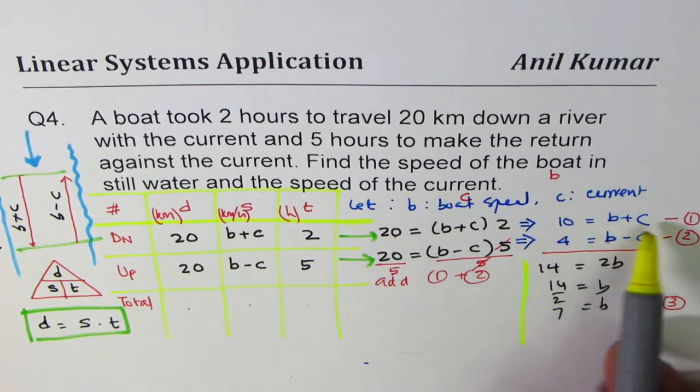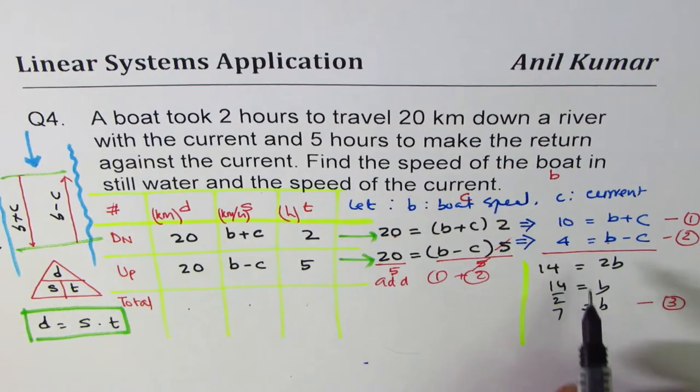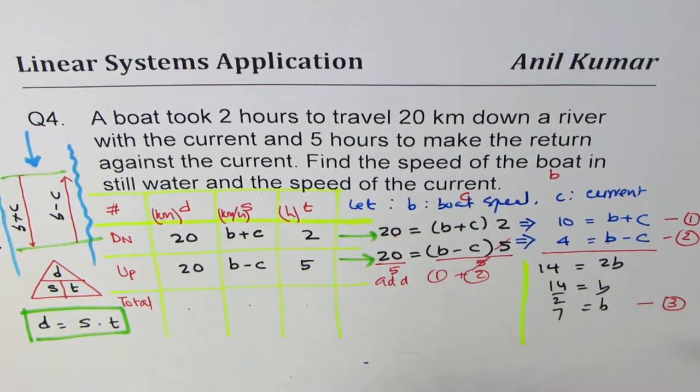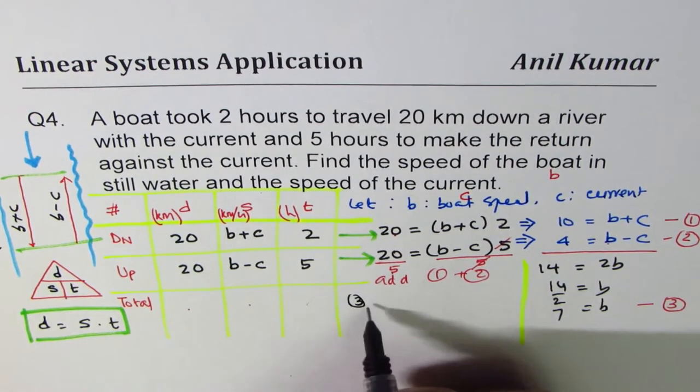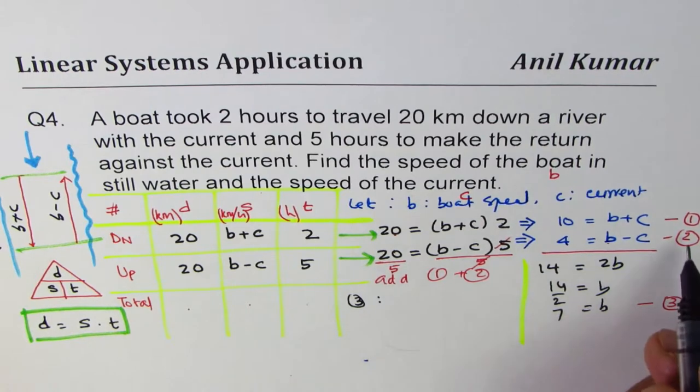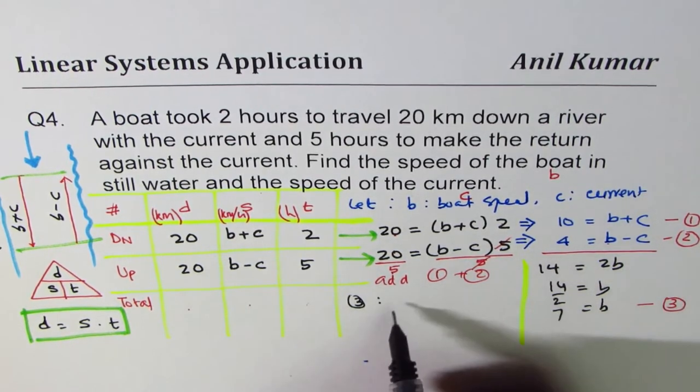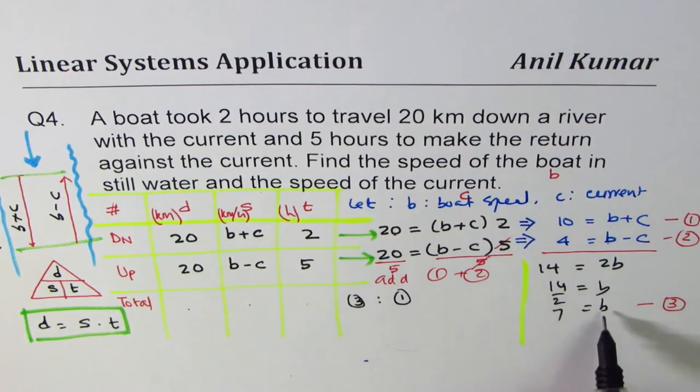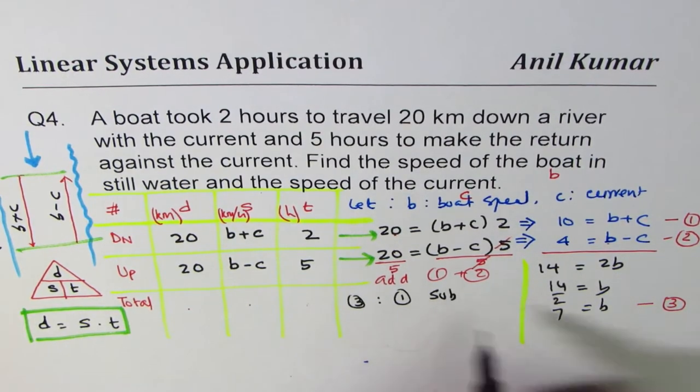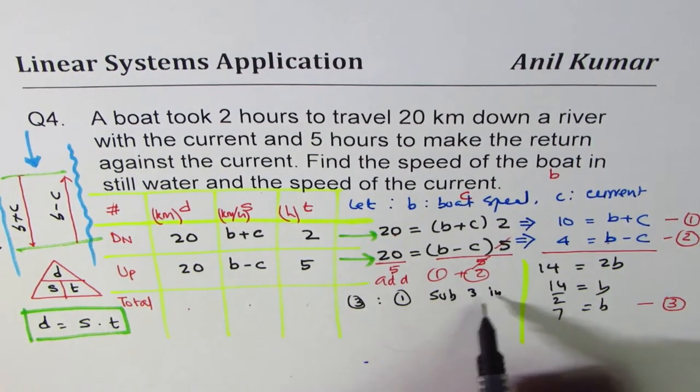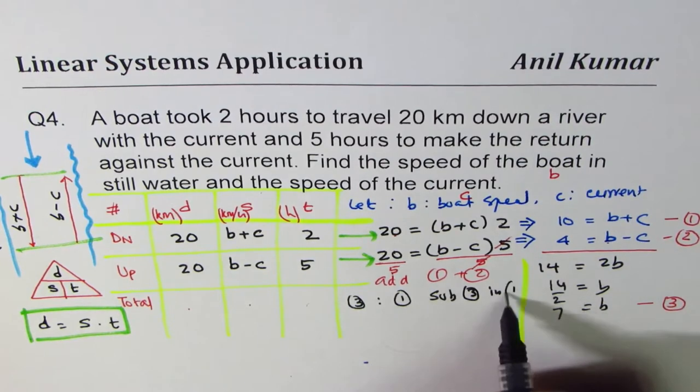You are saying sum of their speed is 10. So you can say equation 3, solve equation 3 and equation, let's say equation 1. You could use any one of them. Substitute 3 in 1.